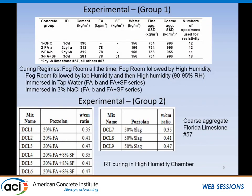We are presenting results from three different projects. Group one was prepared with Portland cement at a cementitious content of 390, with 20% fly ash, and also 20% fly ash with 8% silica fume. For most mixes, we used No. 67 grading coarse aggregate limestone from Florida. Specimens were 4-by-8 inch cylinders (10 cm diameter by 20 cm tall). Curing regimes included: fog room all the time; fog room for 60 days then high humidity; and some transferred to lab humidity then back to high humidity. Some were also immersed in tap water or sodium chloride, done only for the fly ash and fly ash plus silica fume mixes.